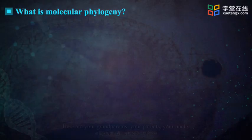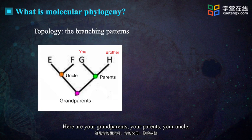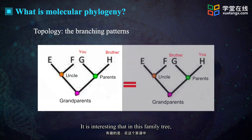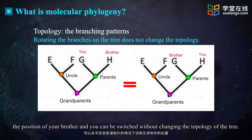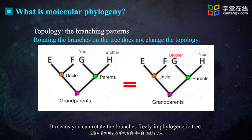As an example, you can draw a family tree for yourself. Here are your grandparents, your parents and your uncle. The two terminal nodes are your brother and yourself. It is interesting that in this family tree, the position of your brother and you can be switched without changing the topology of the tree. It means you can rotate the branches freely in phylogenetic trees.